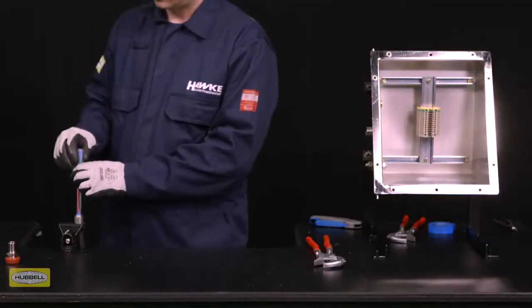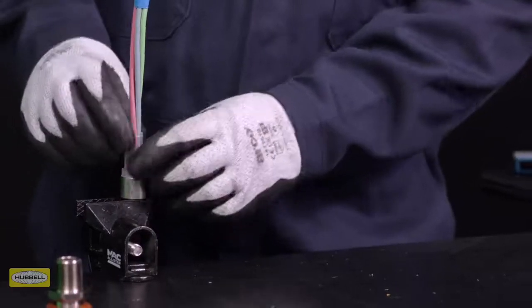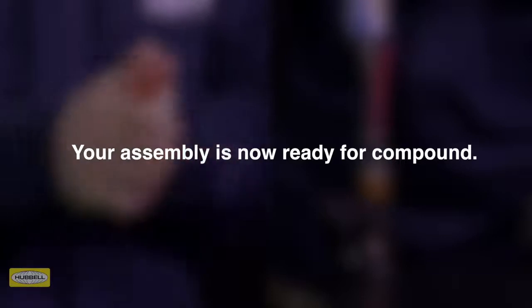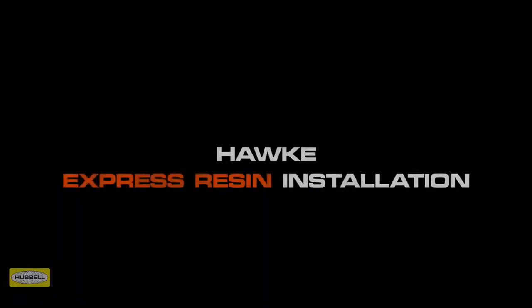Your assembly is now ready for compound. Follow our Hawk Seal compound or Express resin installation videos for step-by-step instructions. Express resin is Hawk's fast-curing liquid pouring seal for use with Hawk barrier glands.